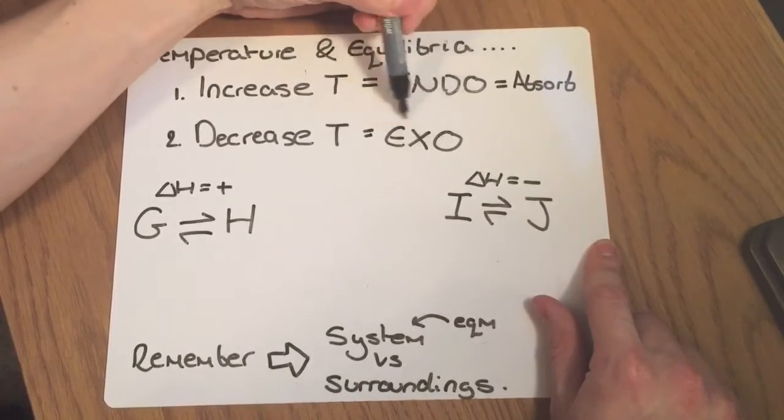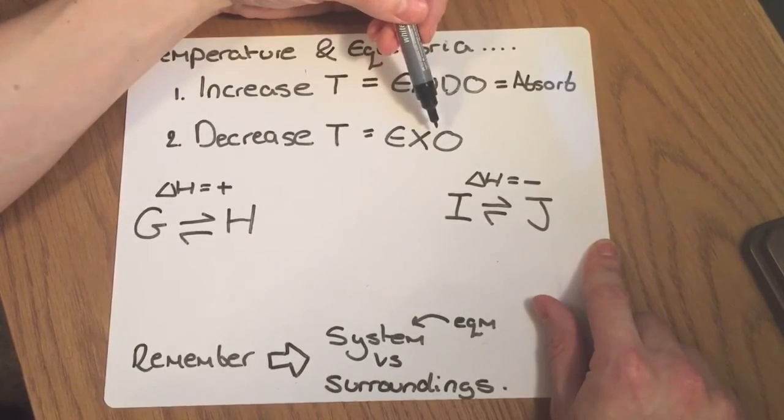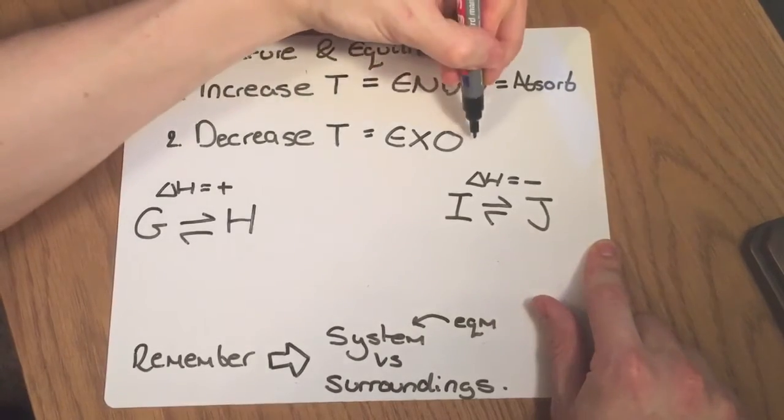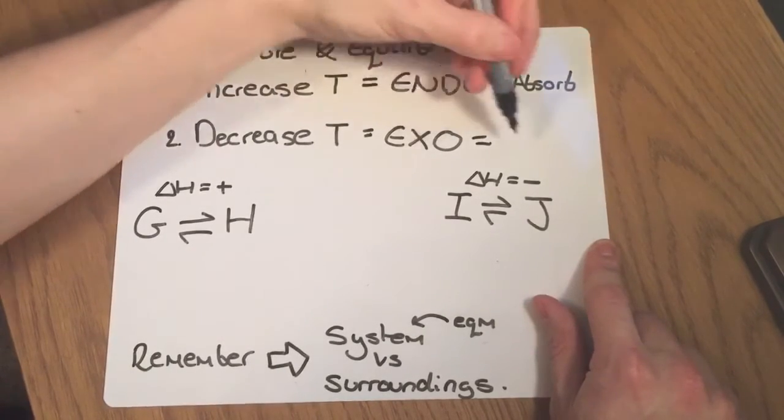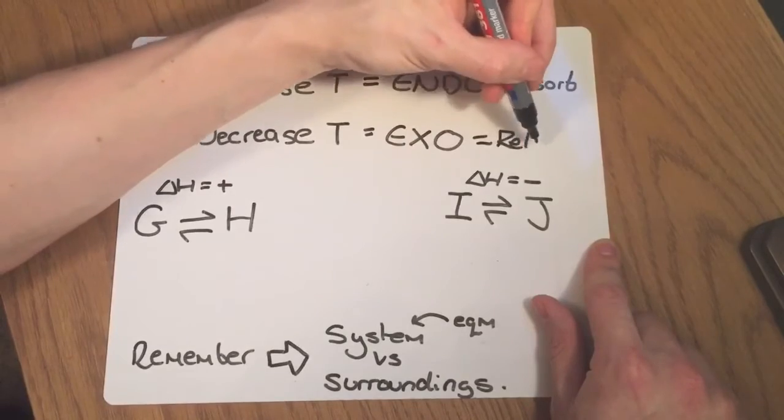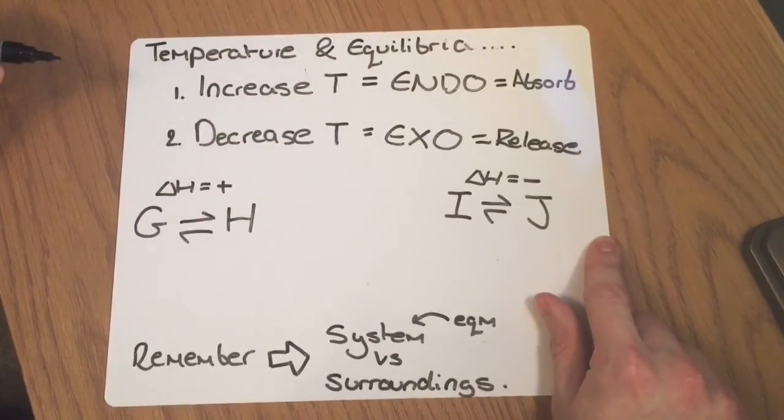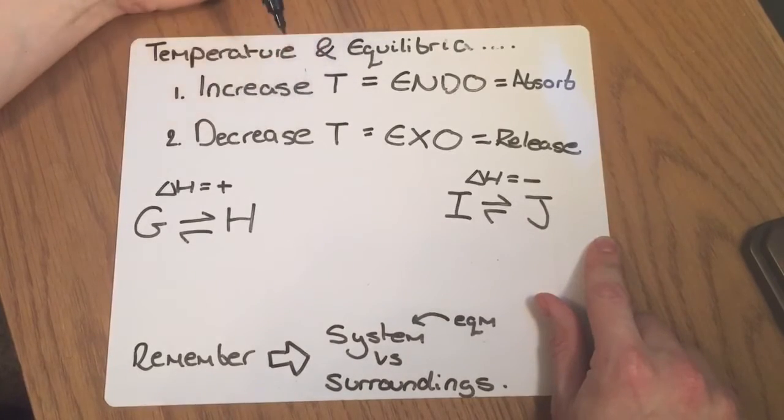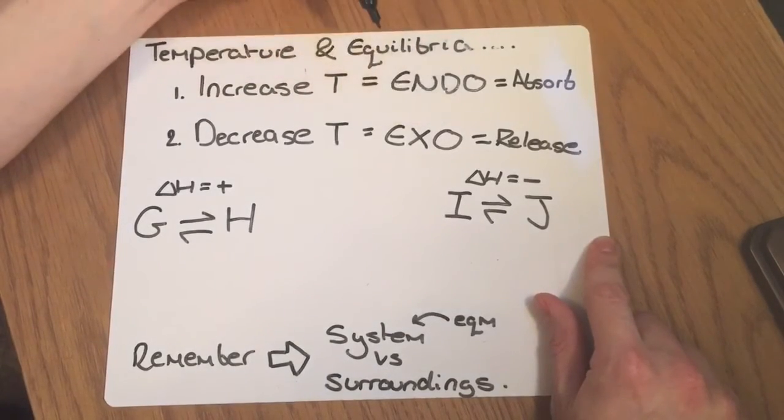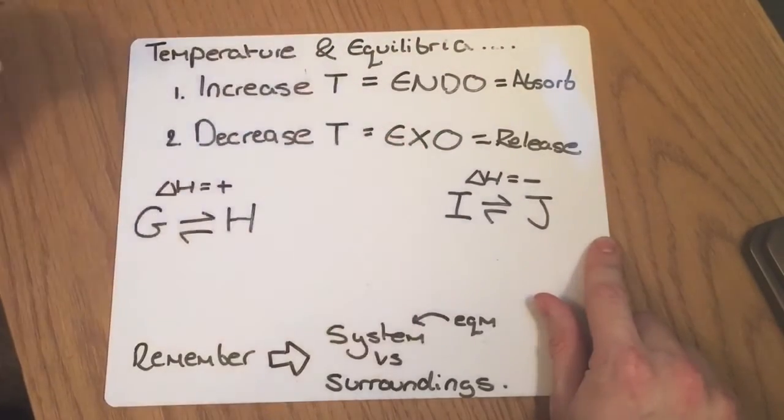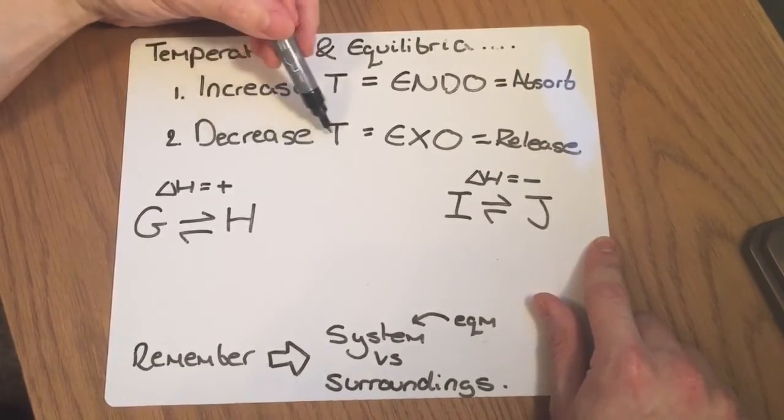However, if you have an exothermic reaction and you lower the temperature, then what's going to happen, and a shift in the exothermic direction is going to release more heat. And so if you've decreased the temperature, then an exothermic equilibrium, if you shift in that direction, it's going to release more heat from the system into the surroundings and raise that temperature back up, opposing this change.